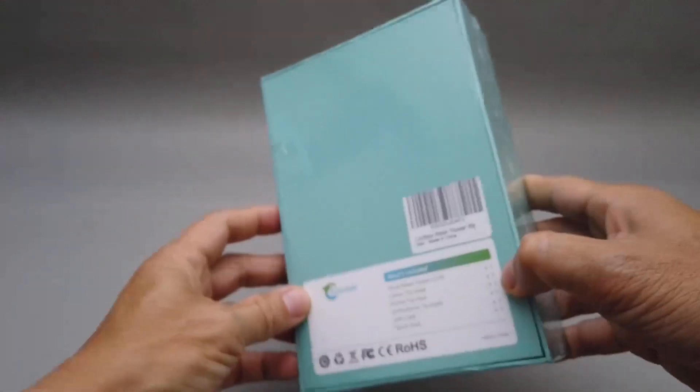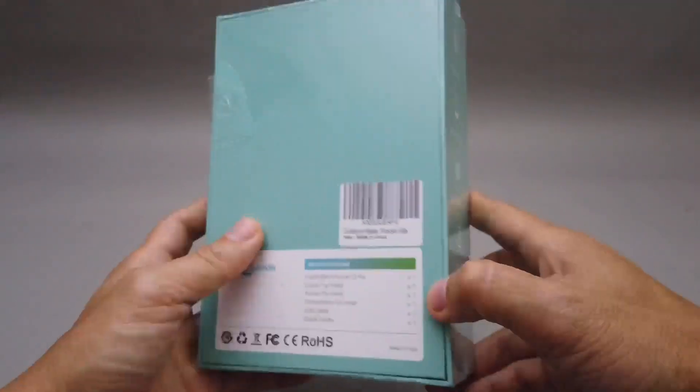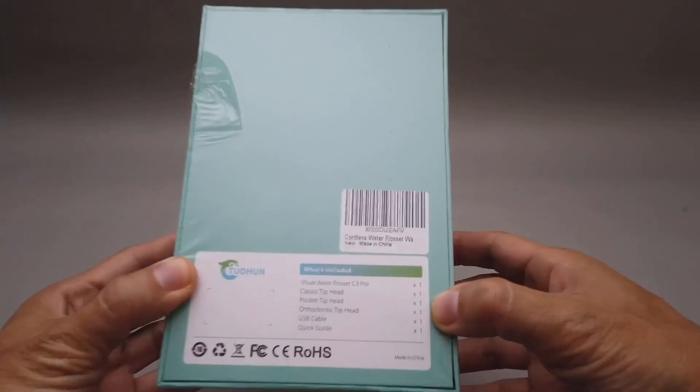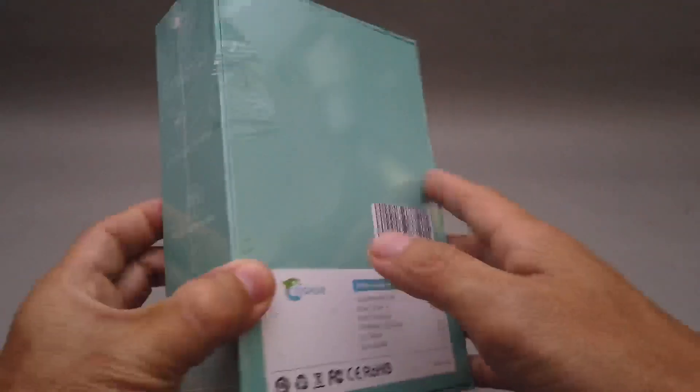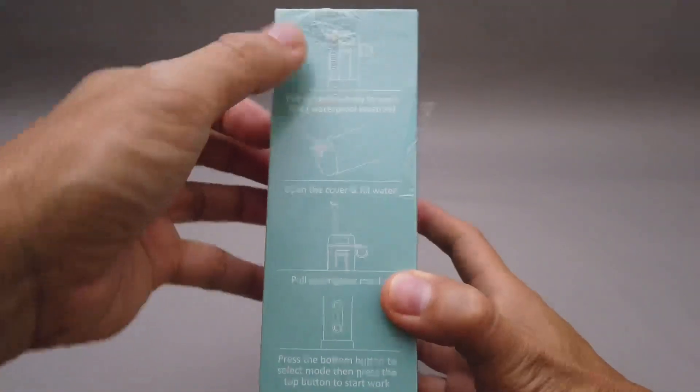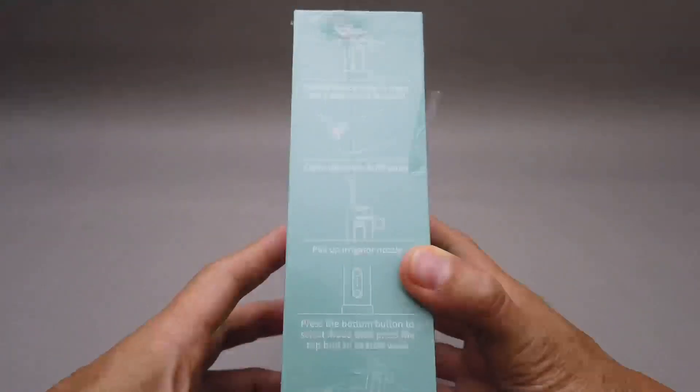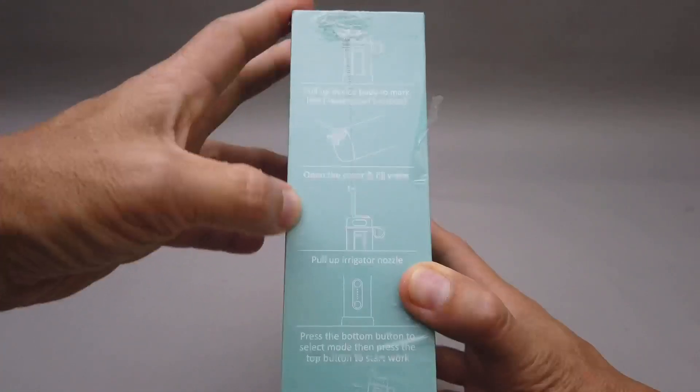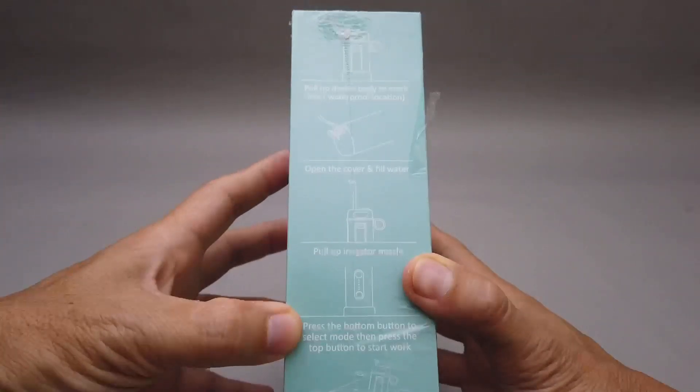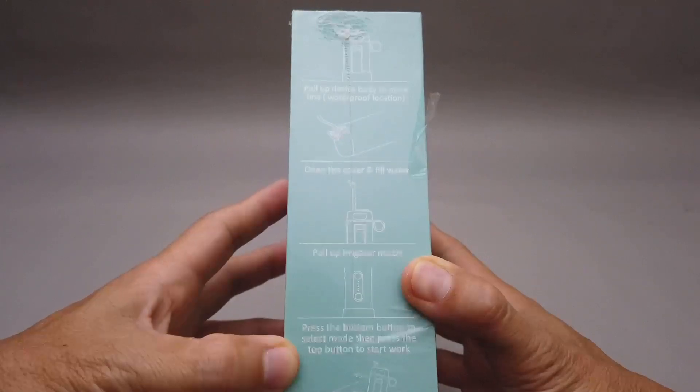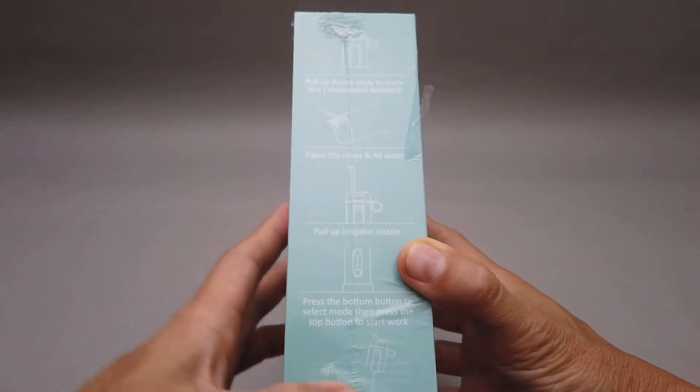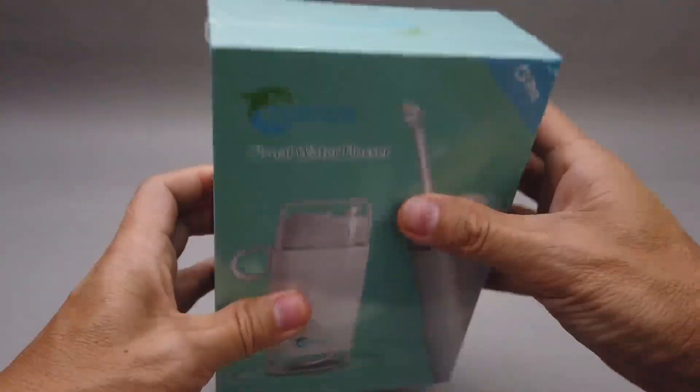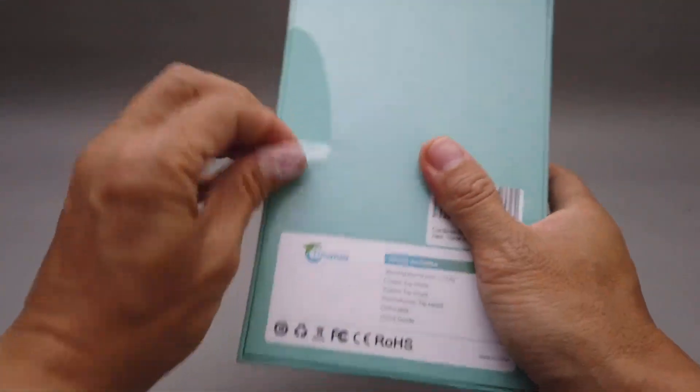Cordless water flosser. Some simple instructions of how to use it: pull up device body, open up, pull up irrigated nozzle, press button, press the top button to start, detach water tank and keep dry. Okay, so here it is.